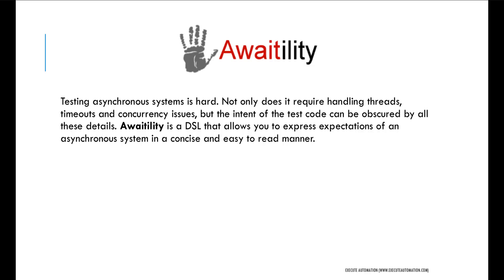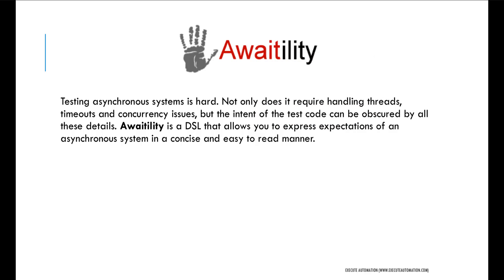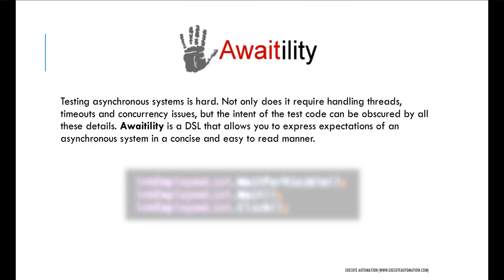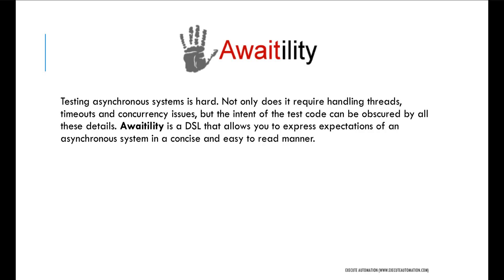It's really cool to see that there is a domain-specific language way of handling these waiting mechanisms. In our previous videos of this course, we discussed custom controls, extending the custom control, and also extending it with a fluent interface — where we waited for a control, clicked a button, waited again, and could wait for an attribute or scroll to an element. It was like a fluent interface and also domain-specific, and that's exactly what Awaitility also does.